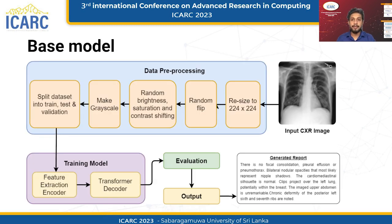The base model utilized in our research incorporates various preprocessing techniques to enhance its reliability and improve its accuracy. The input image undergoes preprocessing before being fed into the CNN feature extraction model, which serves as the backbone of the encoder. In this layer, the last dense layer of the CNN model is removed since we only require the feature extraction of each image. The extracted features are then passed through the transformer decoder, which facilitates the mapping between the extracted features and the medical report words. In the bottom right corner, you can see an example of a generated report from the base model.